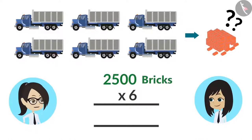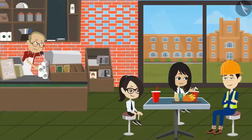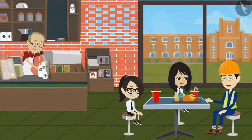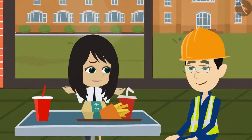I understood it as well. If we multiply 2500 by 6, our answer will be 15,000. This means that in building this canteen, 15,000 bricks were used. Yes, exactly. This must have cost a lot of money.